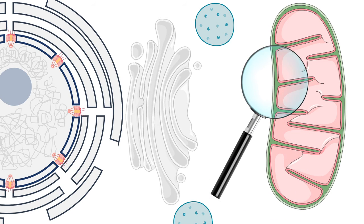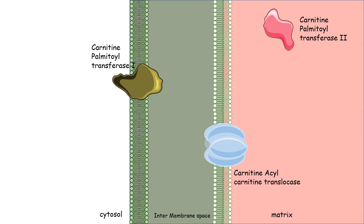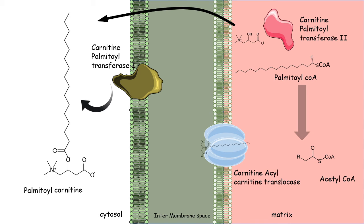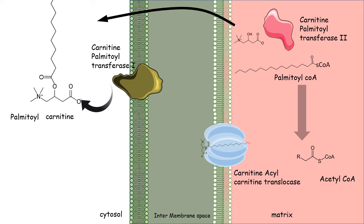Inside the liver, zooming into the mitochondrial membrane and matrix, there are transporter systems known as carnitine palmitoyl transferase (CPT). These transporters exist because fatty acids cannot directly cross the inner mitochondrial membrane, as it is impermeable to them. With the help of CPT, fatty acyl-carnitines are transported into the mitochondrial matrix, where palmitoyl-CoA or any fatty acyl-CoA is eventually converted to acetyl-CoA. Fatty acid breakdown thus occurs in the mitochondrial matrix and is active in the fasted state, when CPT is active.